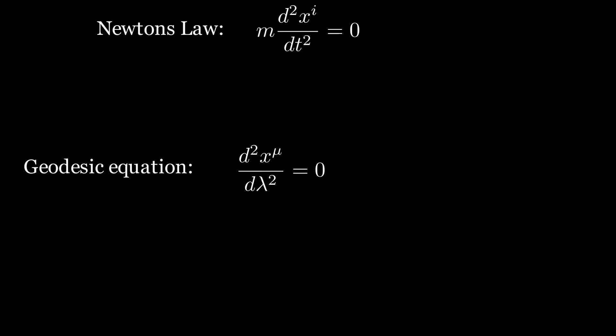But what is a geodesic? Just as in flat space we have straight lines, a geodesic is the generalization of a straight line to curved space. It is the path of a particle that is free from all external non-gravitational forces.